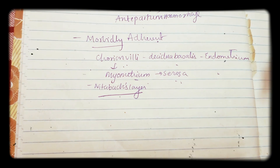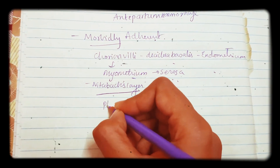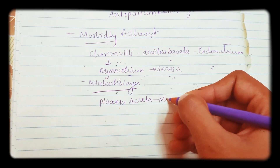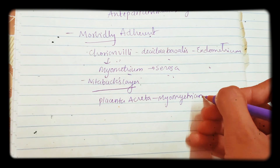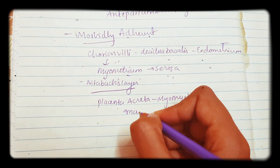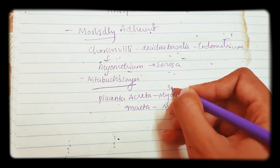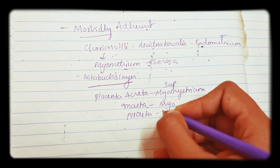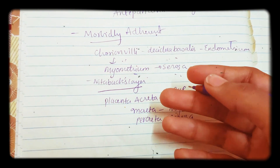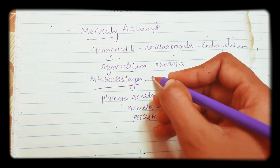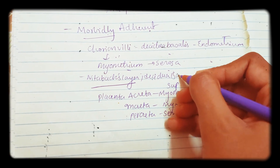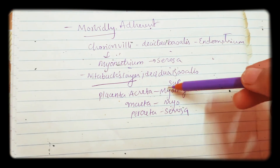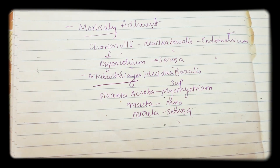There are three types based on depth. Placenta accreta: chorionic villi attach to the superficial layer of the myometrium. Placenta increta: villi attach directly into the myometrium. Placenta percreta: villi go deep, all the way to the serosa layer. If there is no decidua basalis either, there is no limit for the blastocyst so it may progress to accreta, increta, or percreta.